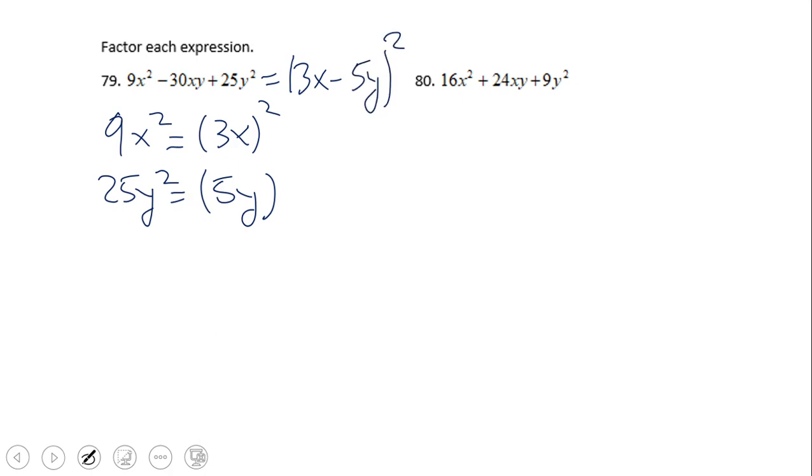Don't forget to check the third condition. See if the negative 30xy is the result of the product of negative 2 times 3x times 5y. In this case, we do have that. Oh yes, the answer is good.